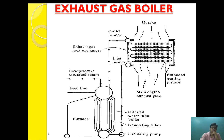From time to time, the exhaust gas boiler needs to be cleaned so that heat efficiency does not deteriorate. For that, it is blown with air, and after a specific interval — around 6 to 7 months — it is also cleaned with water. The cleaning water is collected in a soot tank and ultimately passed through the OWS (oily water separator) before being discharged overboard.